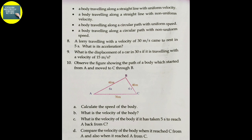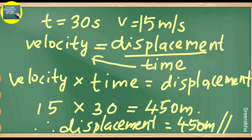Next question: What is the displacement of a car in 30 seconds if it is travelling with a velocity of 15 meters per second? Using velocity equals displacement divided by time, displacement equals velocity multiplied by time: 15 multiplied by 30 equals 450 meters.